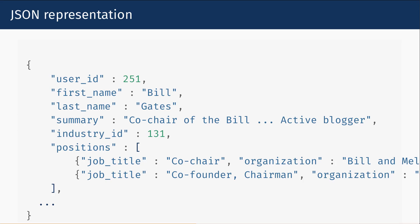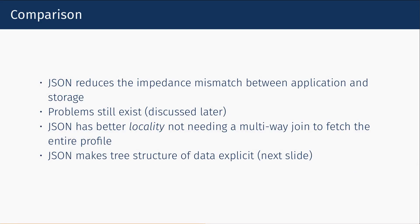Here's a JSON representation of the same thing. The general idea is that you have some individual elements and then some arrays of elements. JSON reduces the impedance mismatch between the application and storage. One advantage is that JSON has better locality — all the information in the resume is in one document, so we don't need a multi-way join to fetch the entire profile. If we're LinkedIn and mainly displaying profiles, it makes more sense to store all the profile data together rather than doing a multi-way join every time.